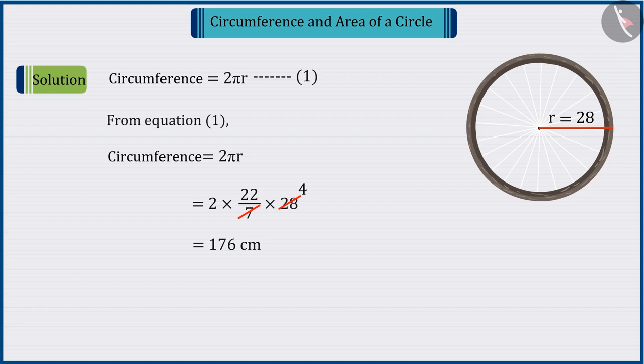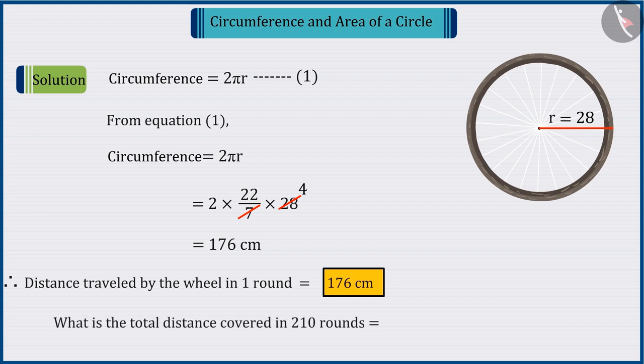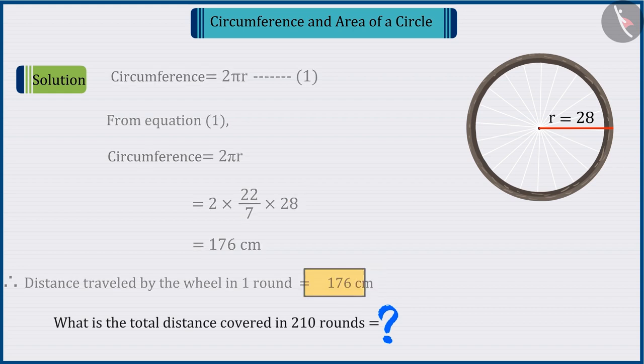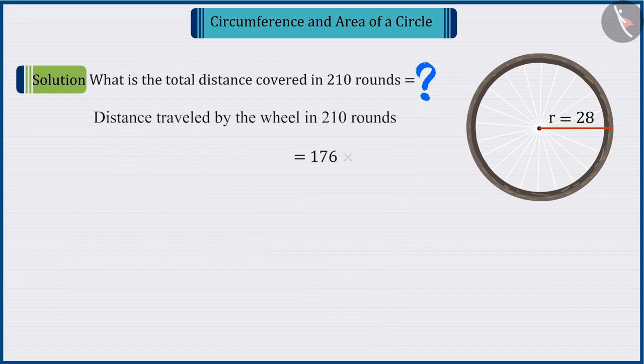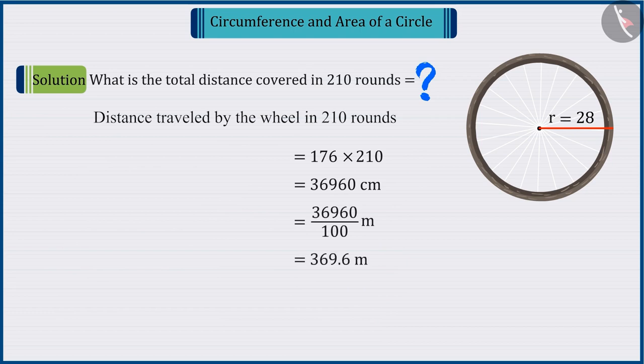So, we can say that the wheel covers a distance of 176 cm in one round. So, can you tell how far it has covered in 210 rounds? Well done! Raj has covered a distance of 36,960 cm, i.e. 369.6 m.